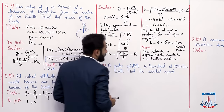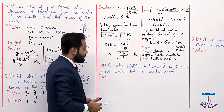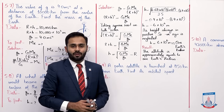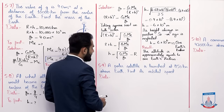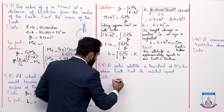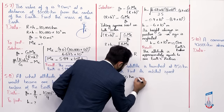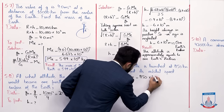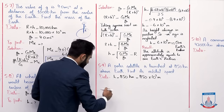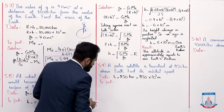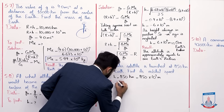Now numerical 5.9: a polar satellite is launched at 850 kilometer above Earth — find its orbital speed. So we have height given as 850 kilometer. Converting: 850 multiplied by 10 to the power 3 meters. We have to find the orbital speed, v_orbital.